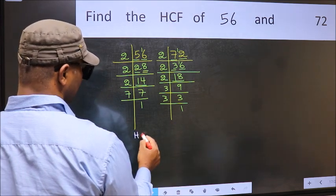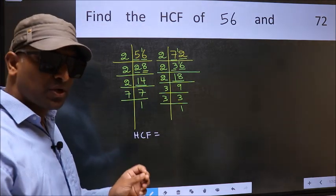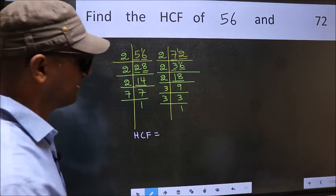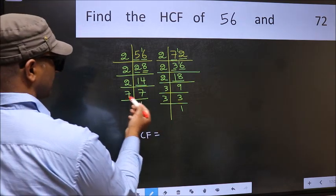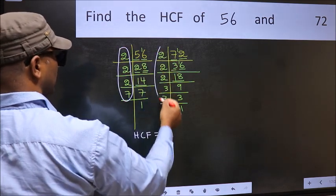Therefore, our HCF is the product of the numbers which should be present in these two places. That is here and also here.